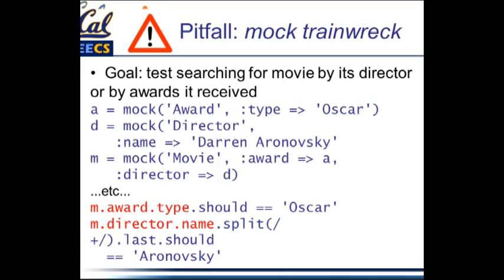This is called a mock train wreck — that's a real term. Here's a hypothetical scenario: suppose I have a test for whether I can search for a movie by its director or by the awards that movie received. I create a mock of an award model of a certain type, a mock of a director model with one of the 20th century's most brilliant directors, and then a movie model that has a certain award and director. Now in my test I'm saying movie dot award dot type and movie dot director dot name dot break it into words — this is telling you that your code is not factored well enough to allow awards, movies, and directors to be managed separately.